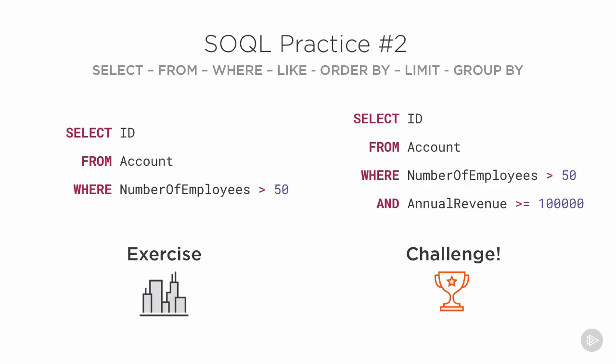Here are the answers to question two. For the exercise, note that we do not wrap the 50 in single quotes because we want it to be treated as a number, not text. For the challenge, you had to use an AND statement to add a second filter.